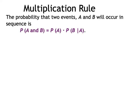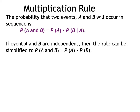The probability that two independent events A and B will both occur is found by: taking the probability of A multiplied by the probability of B given A. But if A and B are independent — whatever is the outcome in A has no influence on B — the rule simplifies: the probability of A and B is simply the probability of A multiplied by the probability of B.